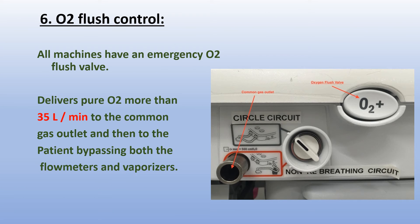Oxygen flush control. All machines have an emergency oxygen flush valve. It delivers pure oxygen at more than 35 liters per minute to the common gas outlet and then to the patient, bypassing both the flow meters and the vaporizers.